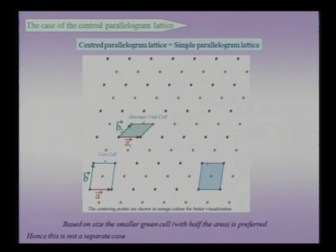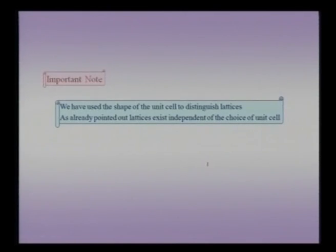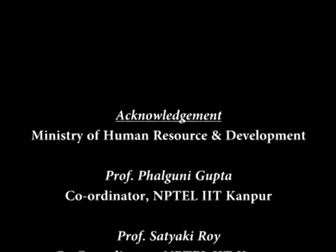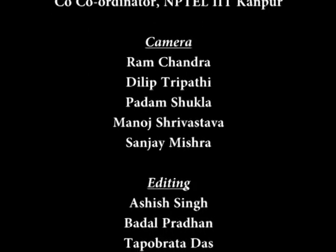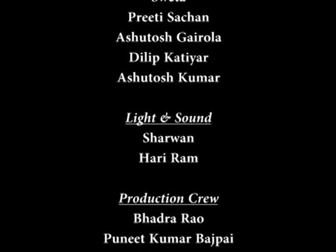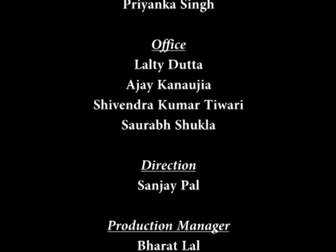This is not a new kind of lattice, and therefore our collection of lattices is not altered by centering the square, the 120-degree rhombus, or the general parallelogram lattice. To emphasize the important point: we have used the shape of the unit cell to distinguish lattices, but lattices exist totally independent of our choice of unit cell.